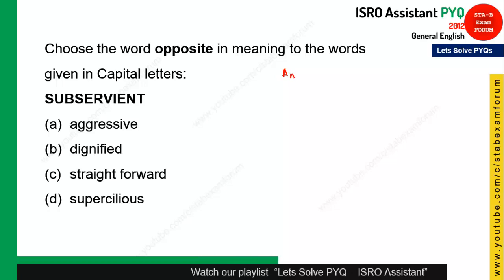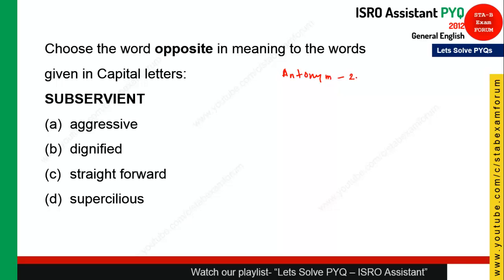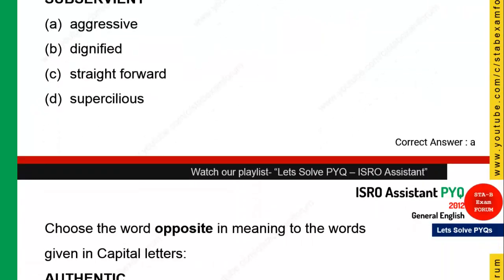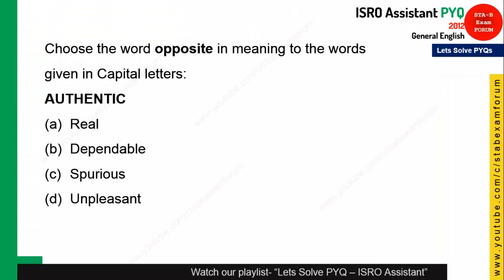The next question is from opposite meaning — antonym. You will find two to three antonym questions in the ISRO Assistant exam. The word is 'subservient' — a very difficult one. The correct answer for this question is 'aggressive', so option A is the right answer.